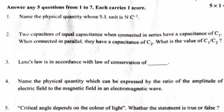Question 4: Name the physical quantity which can be expressed by the ratio of the amplitude of electric field to the magnetic field in an electromagnetic wave. Question 5: Critical angle depends on the color of light — is the statement true or false? Answer: E0 by B0 equals C, the velocity of light. Critical angle does depend on color of light — True.